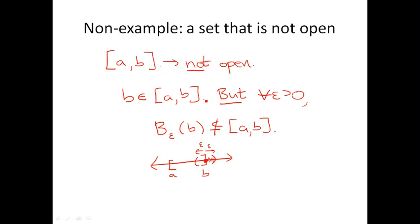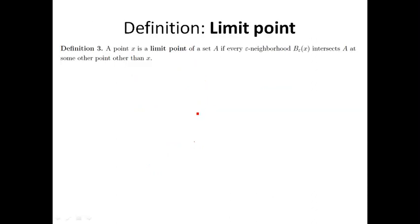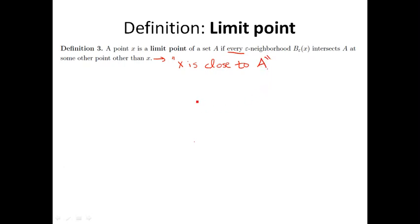We've defined openness using neighborhoods. To define closed, we're going to have to use what's called limit points. A point x is a limit point of the set A if for every epsilon neighborhood, the neighborhood B epsilon will intersect A at some point other than x itself. You can think of limit points as really being a measure of x being close to A — it's not a very precise way of saying it, but it gives us an intuition.